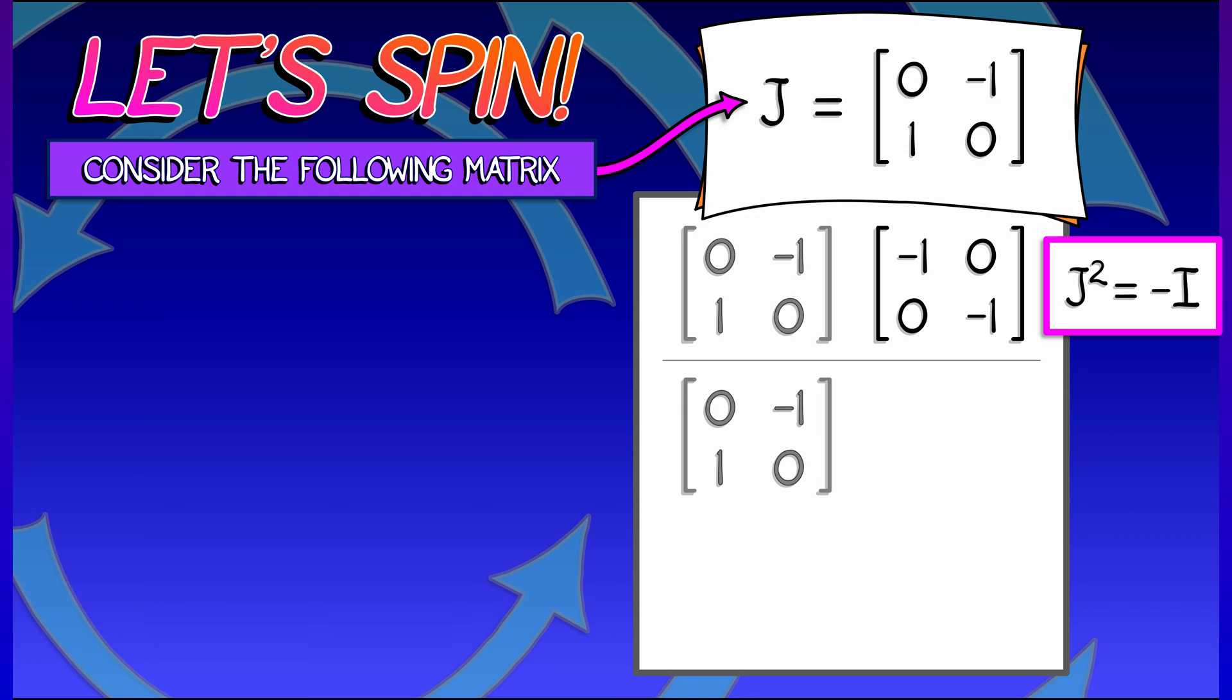Now, if we multiply by J again, then one can check that the result is 0, 1, negative 1, 0. Now, this too is not quite what we started with. It's just like J, but with a minus sign in front of it. So you could say that J cubed equals minus J.